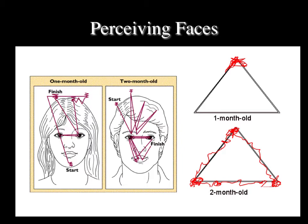Infants are particularly interested in looking at human faces but tend to focus on different areas depending on their age. At birth, infants are attracted to the border or periphery of the face, paying more attention to the hairline or edge. By two months, infants begin to attend to internal features such as the nose and mouth. By three months, infants focus almost entirely on the interior of the face, particularly the eyes and lips — possibly because these areas involve movement that can be tracked, and because of the contrast between lighter and darker elements like the eyes, lips, and teeth. By three months, infants can also tell the difference between their mother's face and a stranger's face.